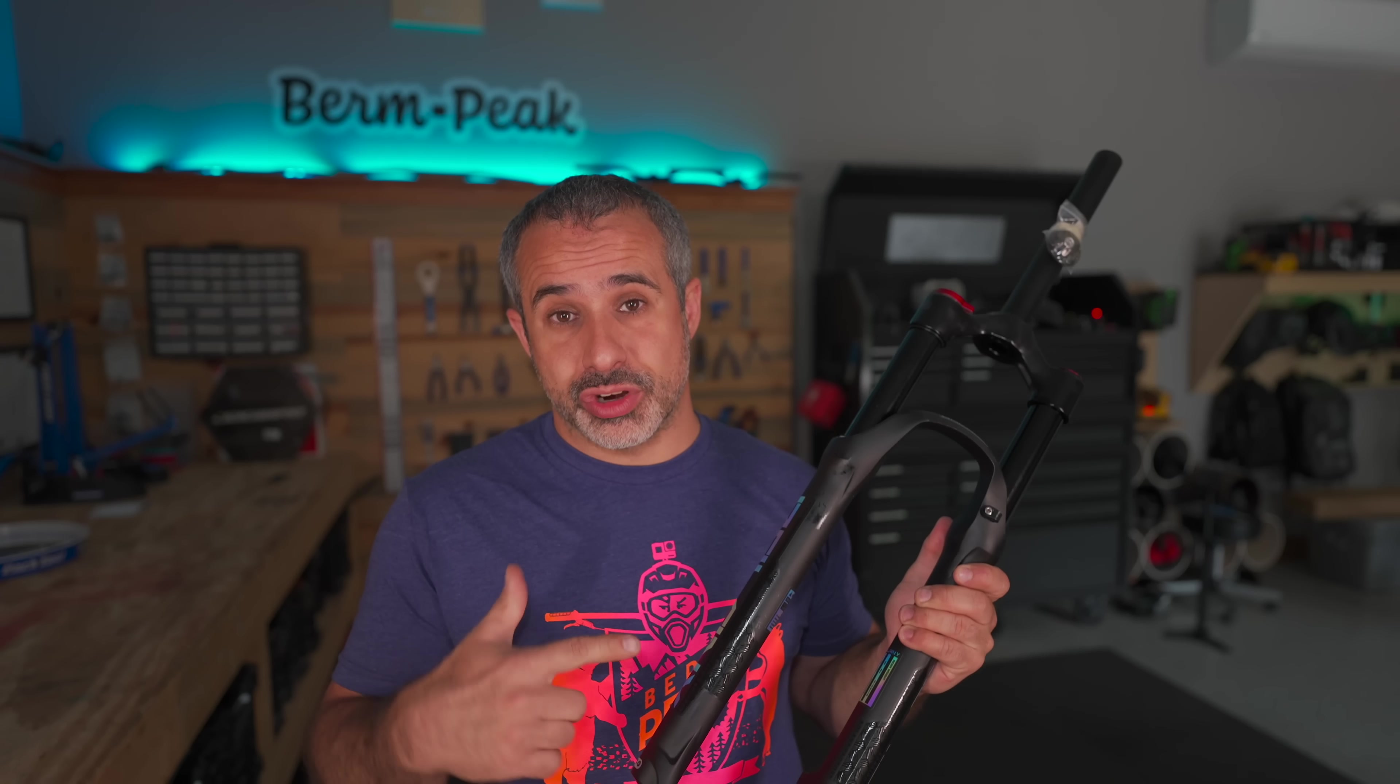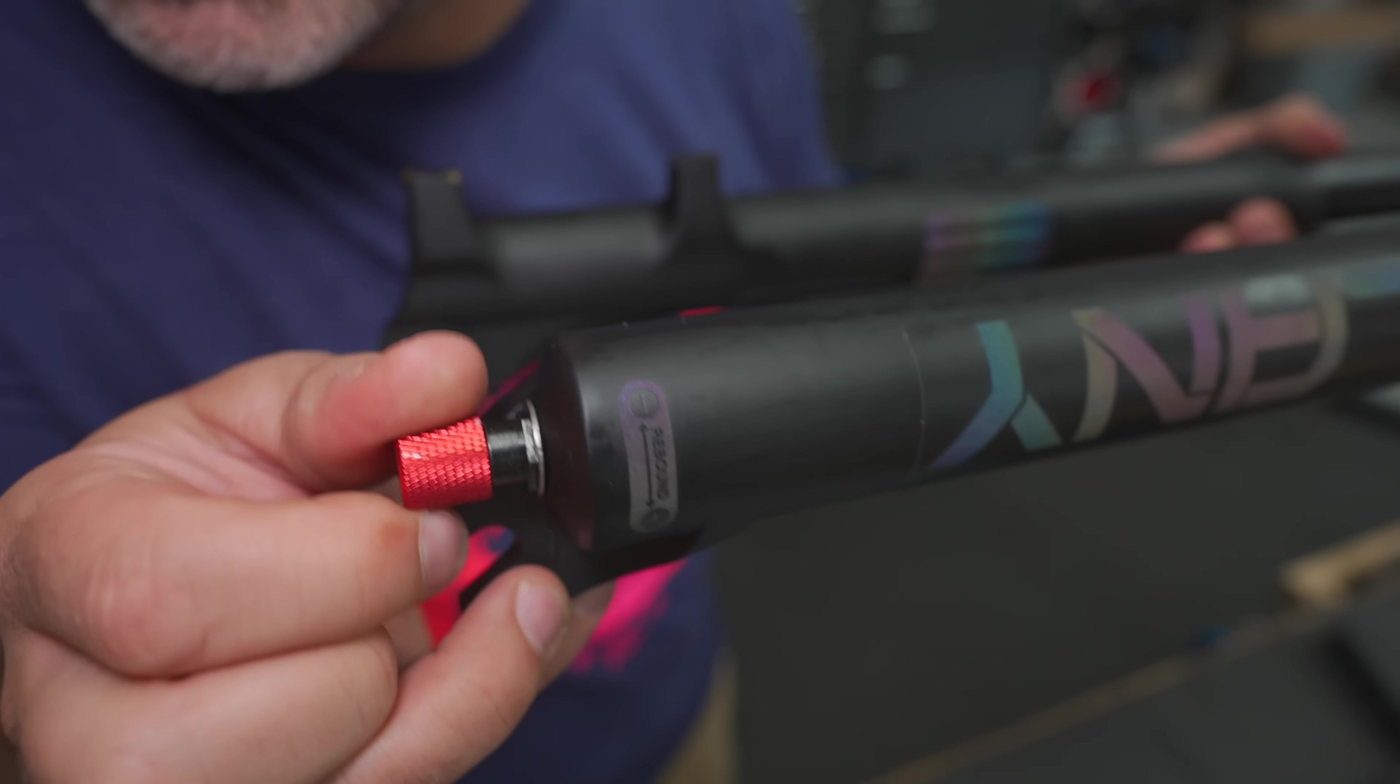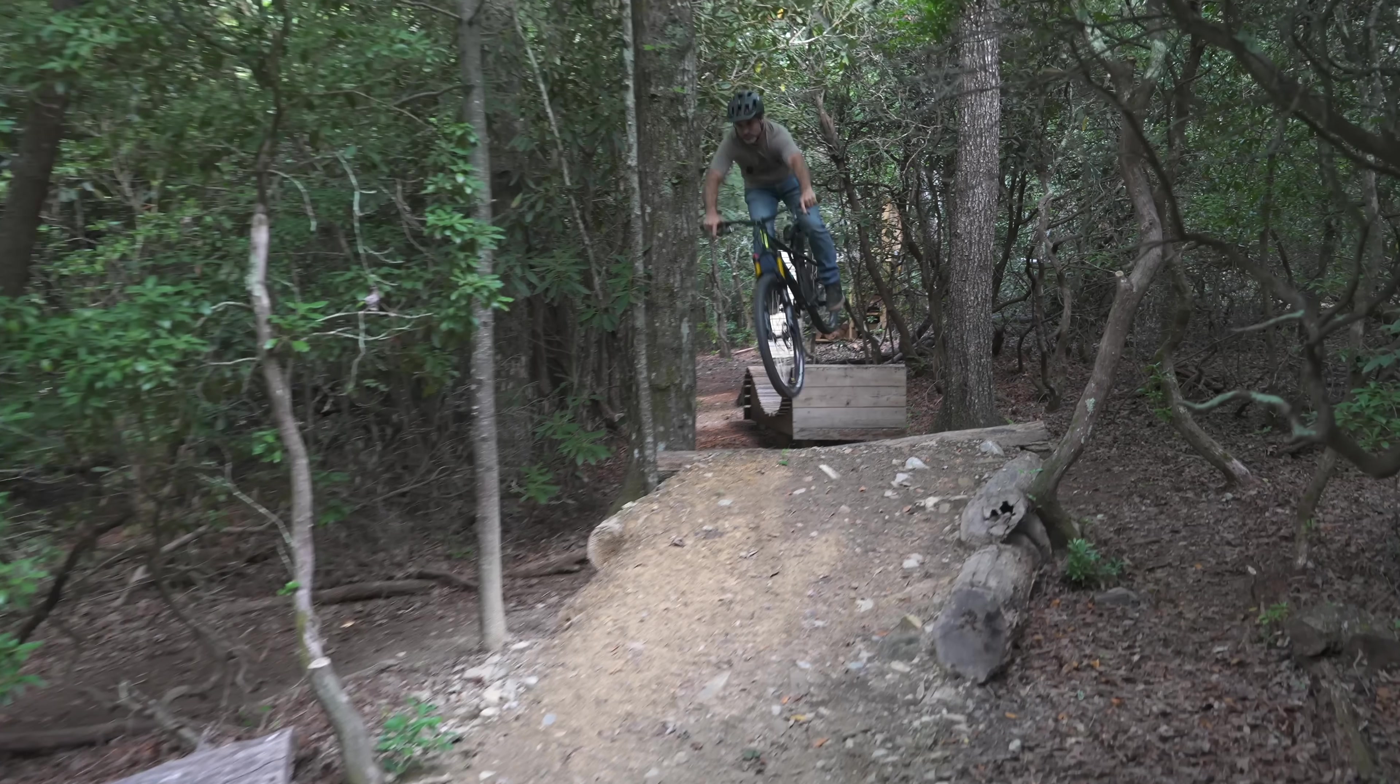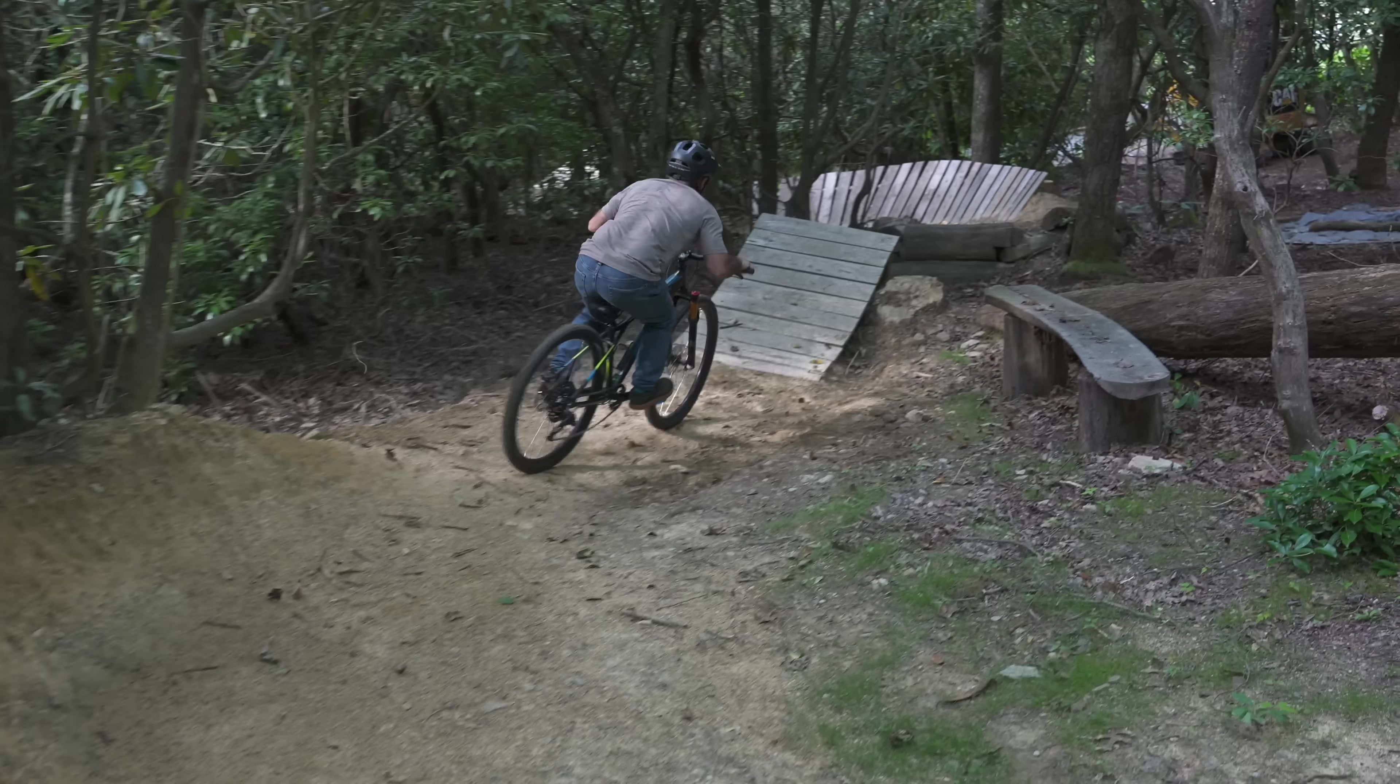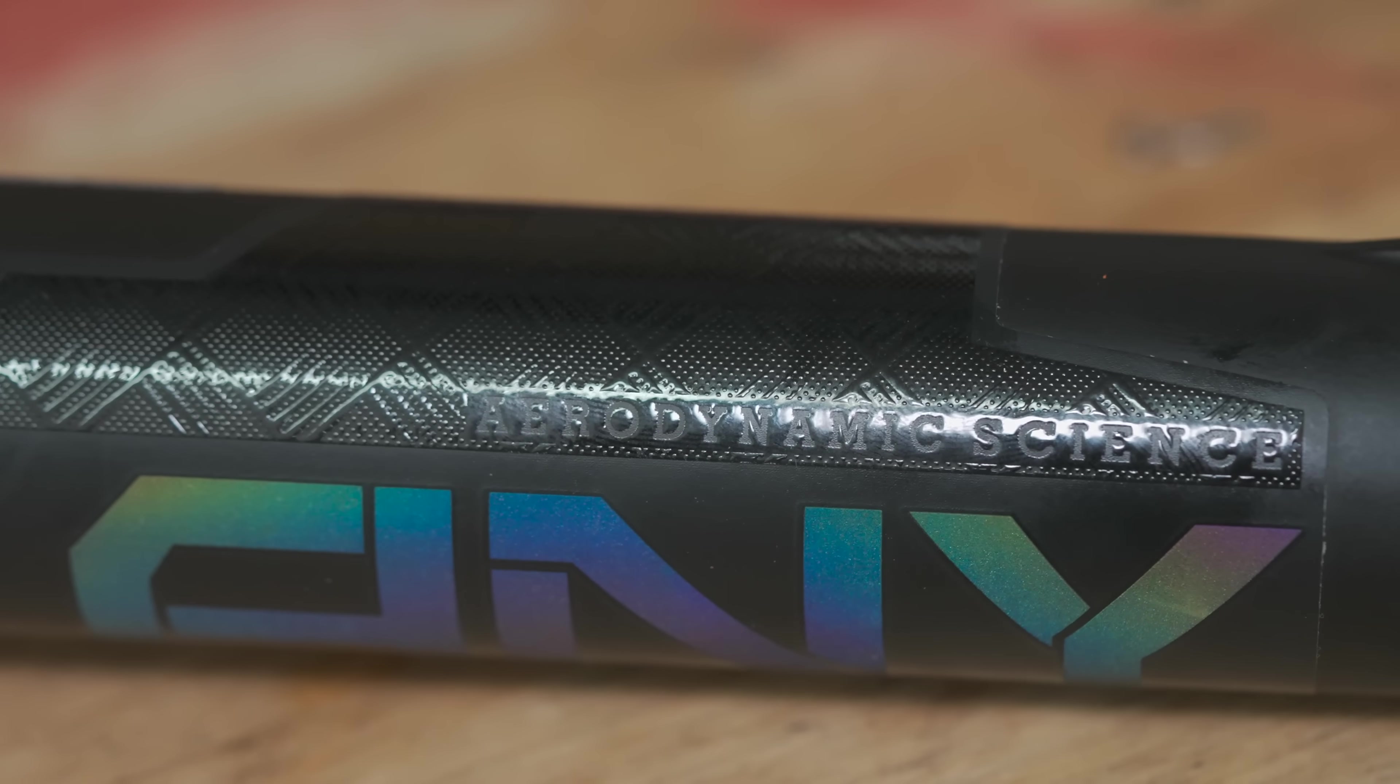This air fork is $130. You can get it on Amazon. It's got compression and rebound damping, and I've used it before. If you're 140 pounds and you ride cross-country trails, this thing is going to be fine, but I want to know how far we can really push this thing.